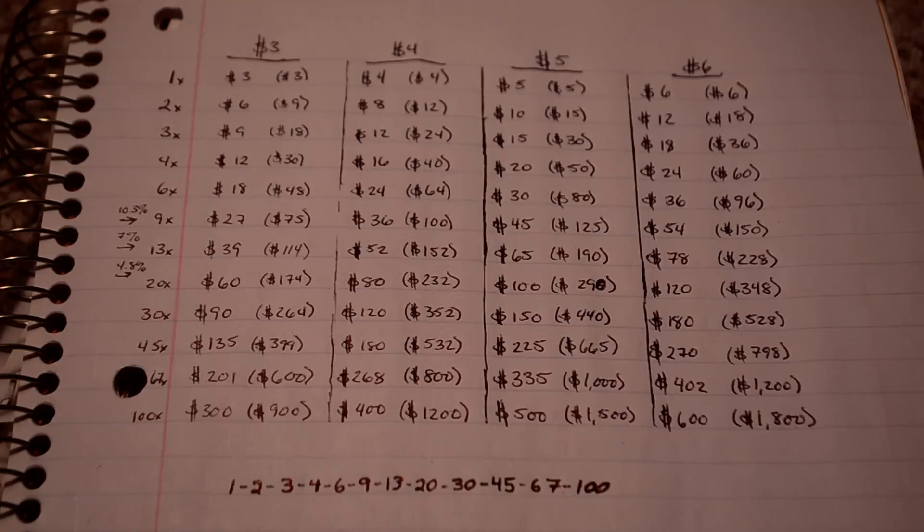So basically what you're looking here is sequences of betting for playing dozens and columns in roulette. In case you're not too familiar with roulette, by dozens I mean play thirds of the field. So first dozen would be one through twelve, second dozen would be thirteen through twenty-four, third dozen would be twenty-five through thirty-six, or the three columns which go up.